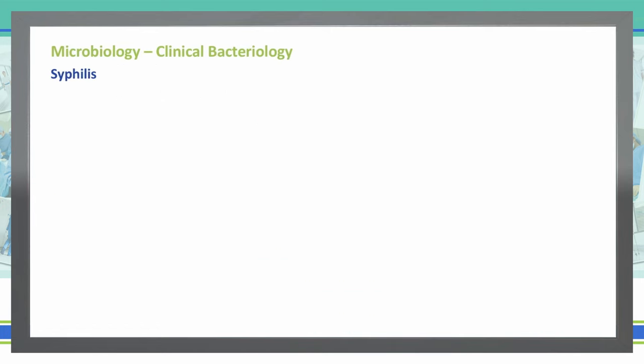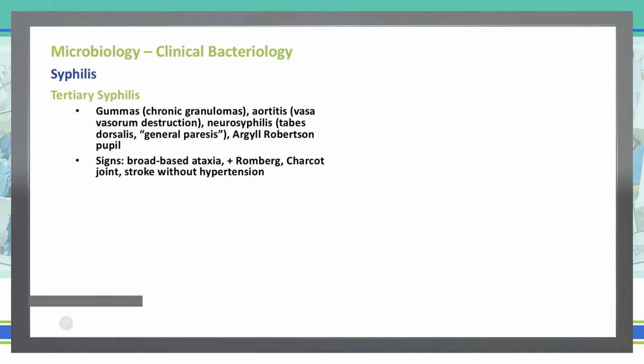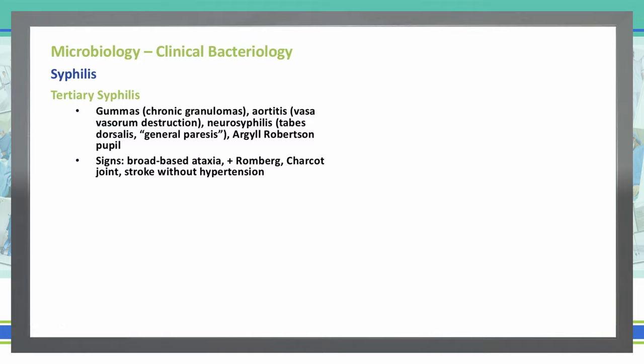Tertiary syphilis is even further down the road, where we can see gummas — which are chronic granulomas — aortitis, or vasa vasorum destruction. Neurosyphilis presents as tabes dorsalis and general paresis. The Argyll Robertson pupil is also present in tertiary syphilis. Signs include broad-based ataxia with a positive Romberg sign, Charcot joints, and strokes without hypertension.